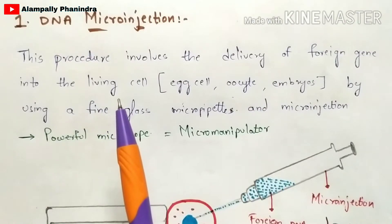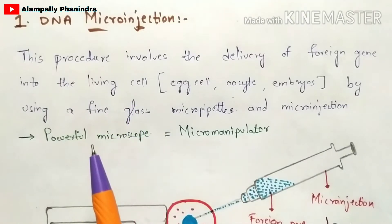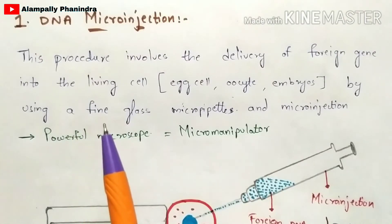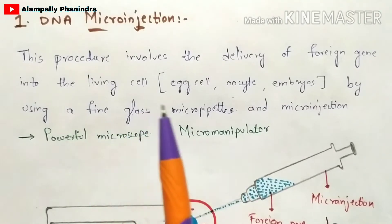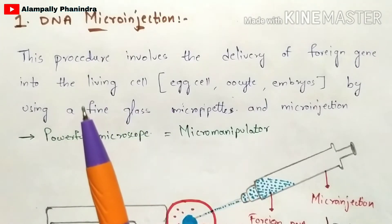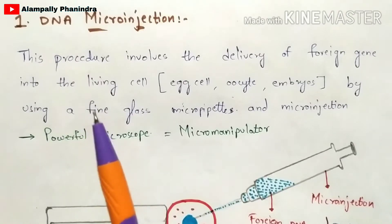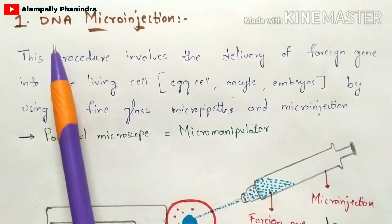This DNA microinjection technique is highly used in animal transgenesis as well as recombinant DNA technology. This method is mainly used for the direct introduction of recombinant DNA into the host cell. Recombinant DNA is the modified DNA which has specialized characteristics, and that DNA will be introduced into the host cell using DNA microinjection.